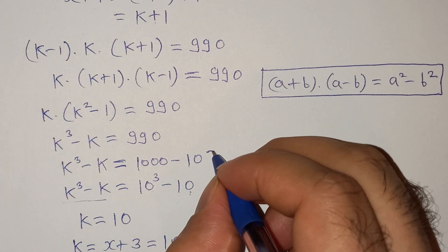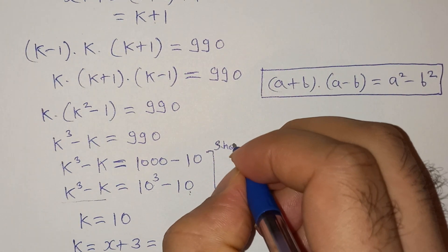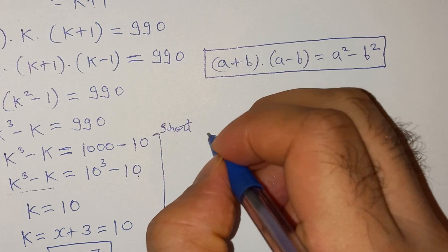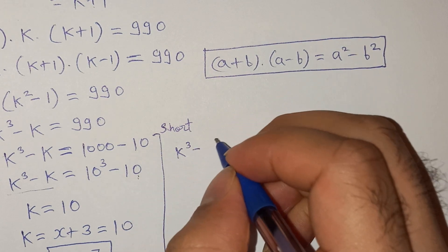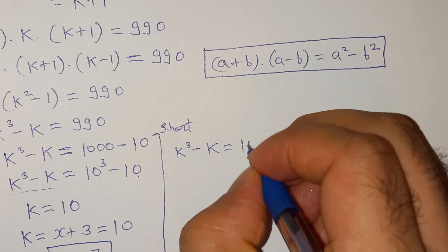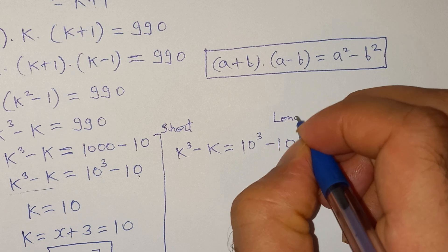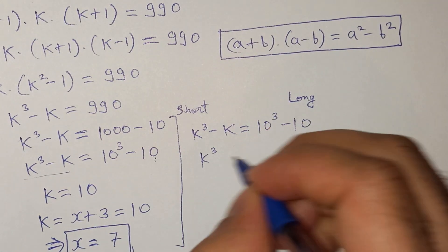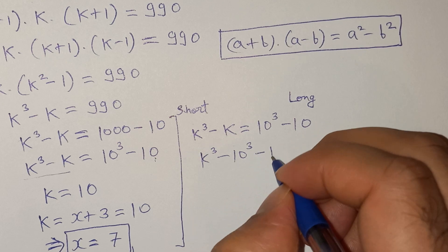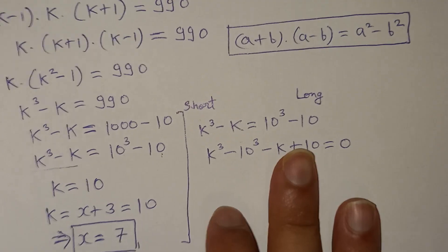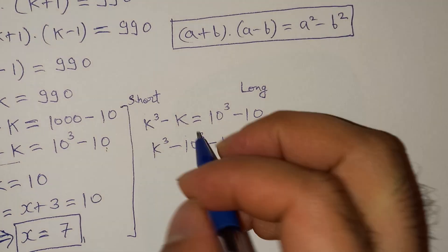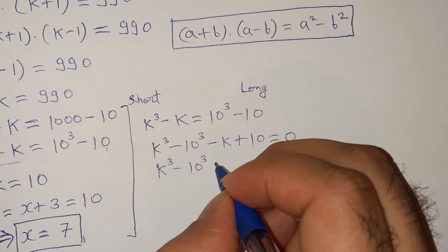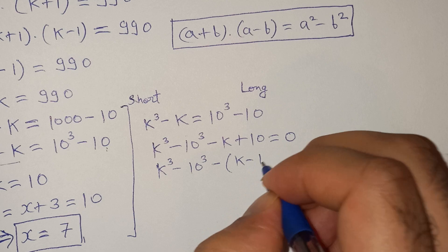Now let me solve it through the long way. Starting from k cubed minus k equals 10 cubed minus 10, we rearrange to get k cubed minus 10 cubed minus k plus 10 equals to 0. Bringing out minus 1: k cubed minus 10 cubed minus (k minus 10) equals to 0.